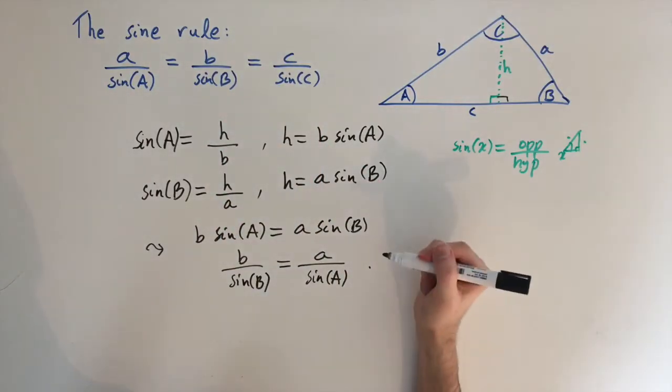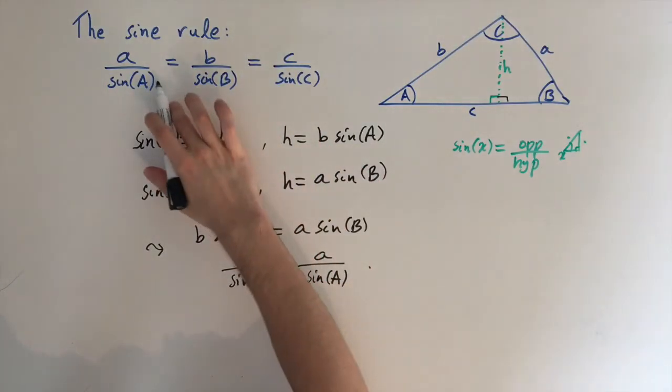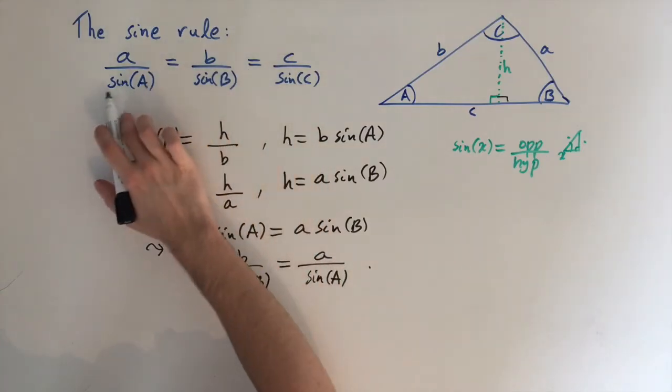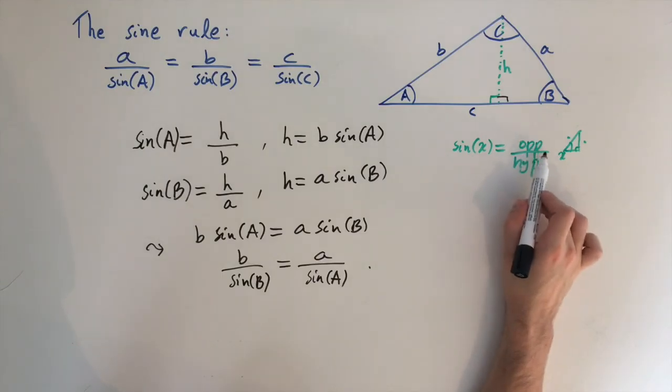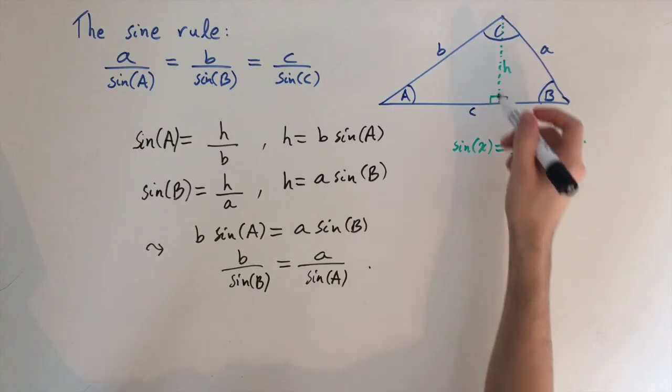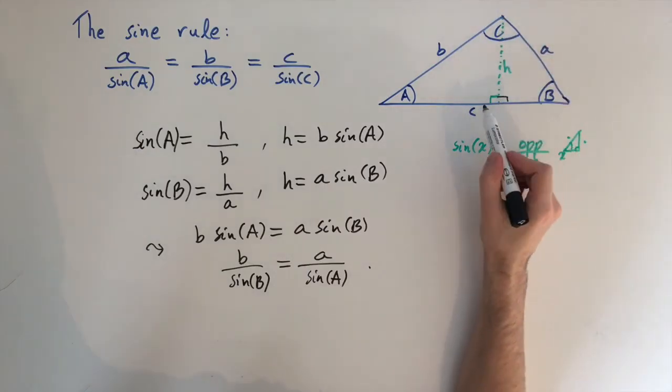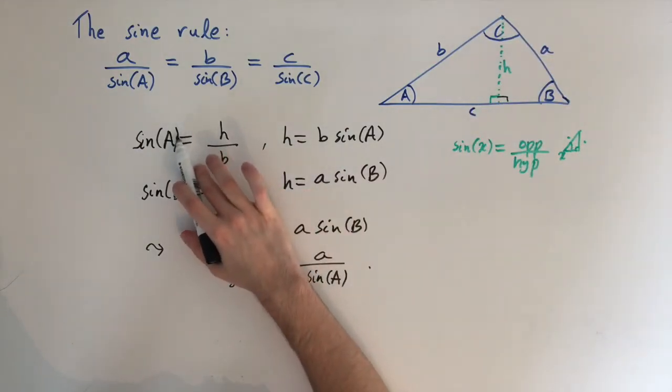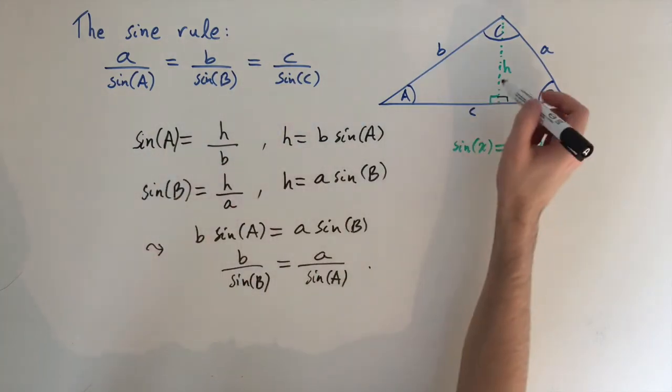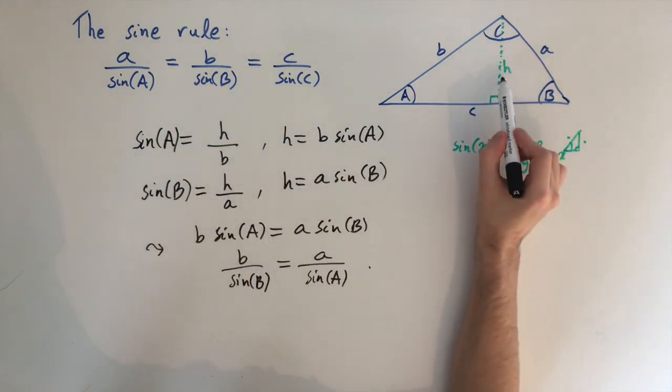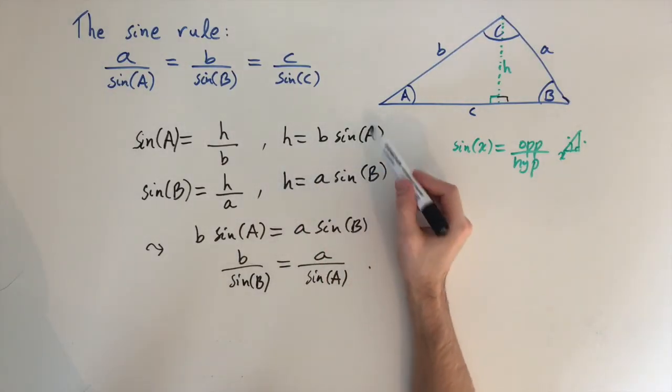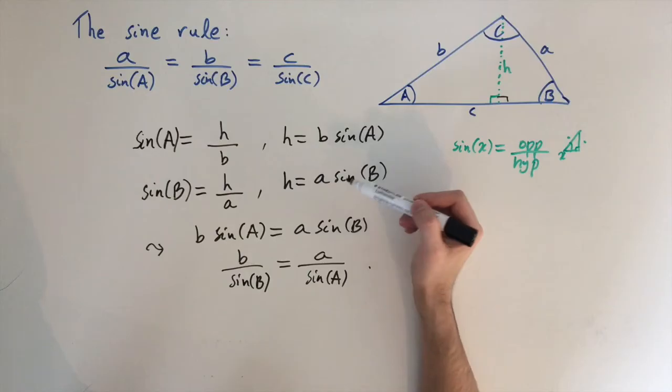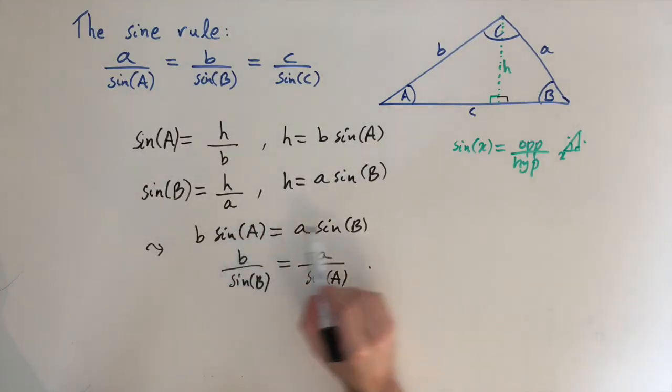So let's just recap what we've done. So we're trying to show this equation is true, and to do that we looked at the definition of sine, which is the length of the opposite length divided by the hypotenuse if we're working in a right angle triangle. So we created two right angle triangles, and then we wrote the definition of sine of a and sine of b in terms of these new triangles and in terms of h. Then we rearranged for h and equated these two equations because they're both equal to h, and this is how we got the equation involving sine of a and sine of b.